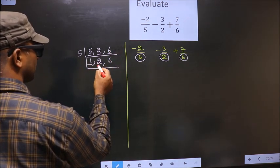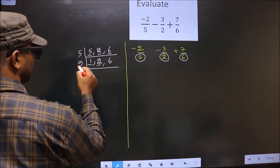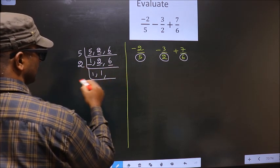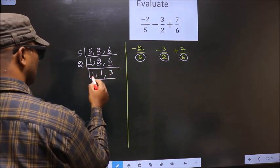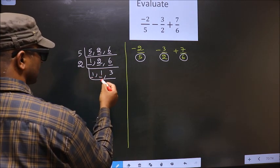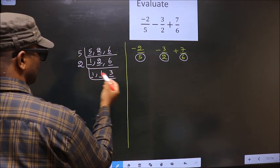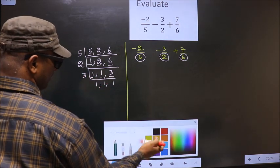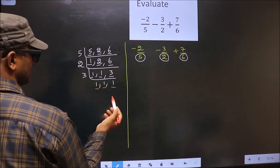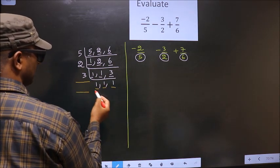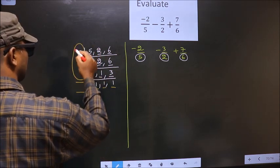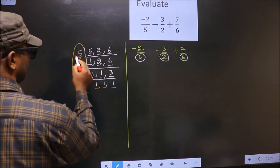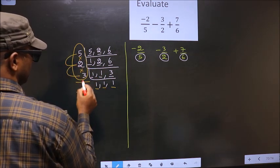Now we got 1 here, so focus on the other number, that is 2. 2 is a prime number, so 2 once is 2. The other number 6 — when do we get 6 in the 2 table? 2 times 3 is 6. Now we got 1 here. So focus on the other number, that is 3. 3 is a prime number, so 3 once is 3. We got 1 in all 3 places, so our LCM is the product of these numbers: 5 into 2 is 10, into 3 is 30.